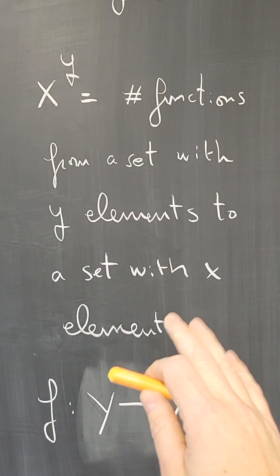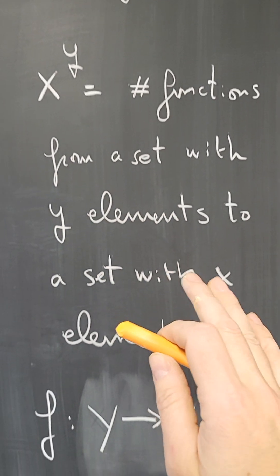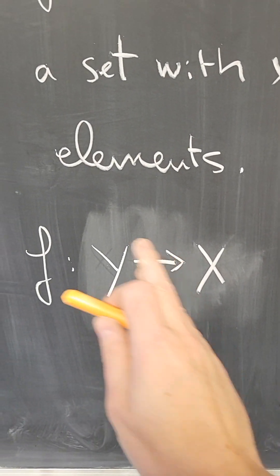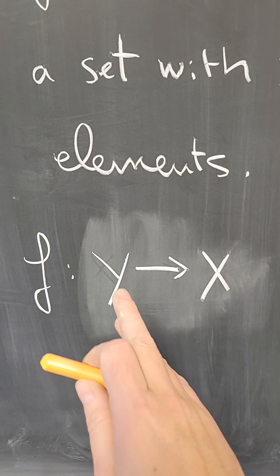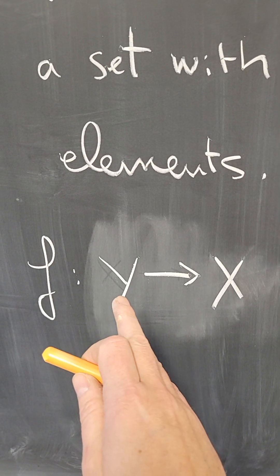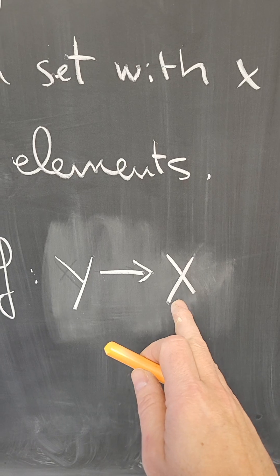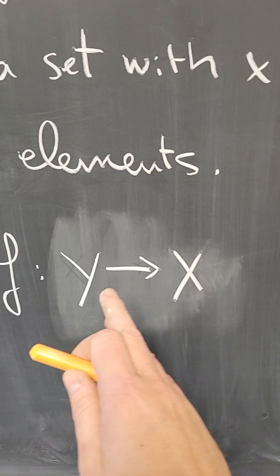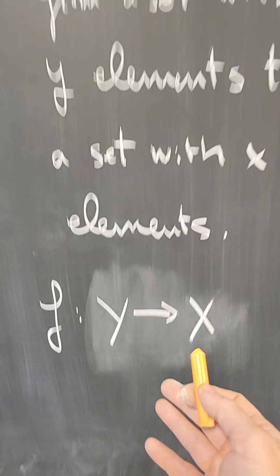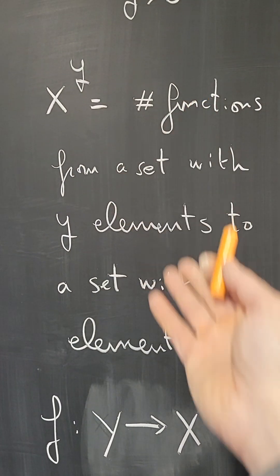Why does that match our intuition of x to the y? Because if you have y elements and x elements, the number of functions will be determined by where the y elements go. And if for each element I have x possibilities for the image of that element, then there will be x to the y functions. So that agrees with x to the y.